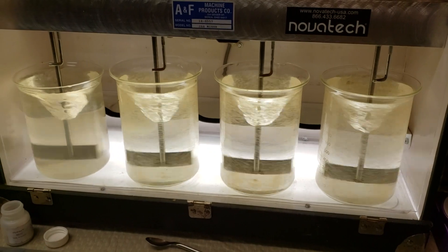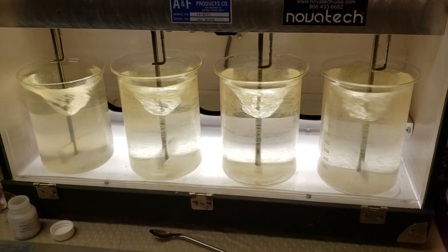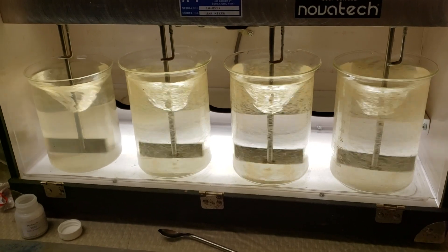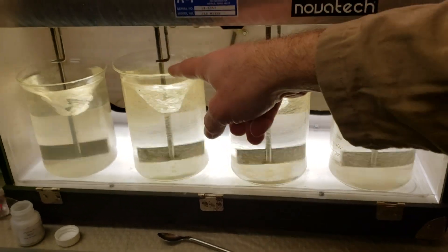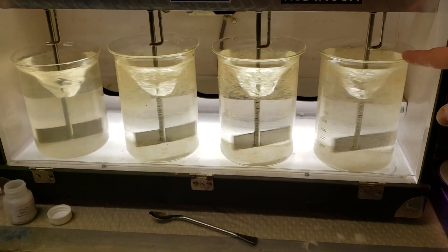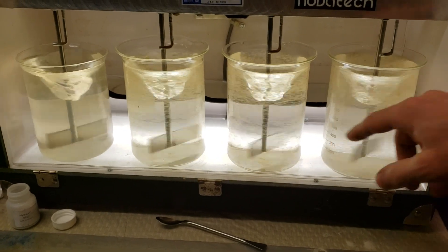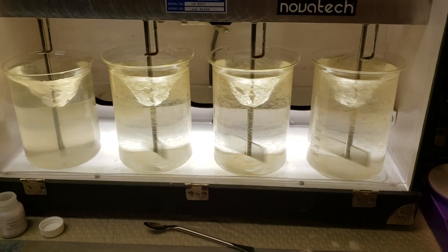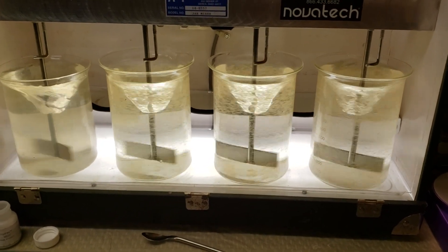All right, we're doing some jar testing today on the Lake Thomas water. The jar on the left is untreated, then we've got 5, 10, 15 ppm of coagulant, 1 ppm of flocculant, and about 8 grams of sand in the three jars to the right.